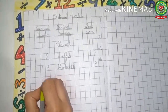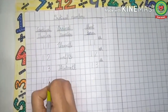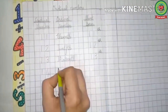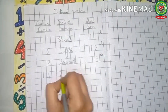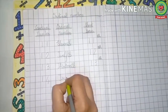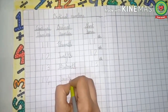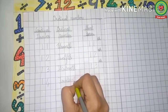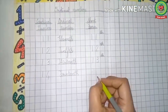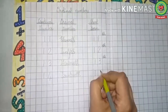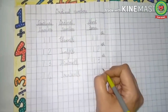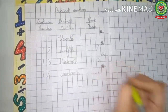After 13 comes 14. We write 14 under cardinal numbers, and the ordinal number of 14 is 14th. Spell 14 with me: F-O-U-R-T-E-E-N. Then we add TH and it becomes 14th. Again we write 14 and add the last two letters TH, and it becomes 14th.